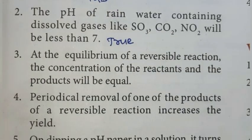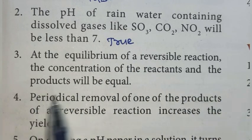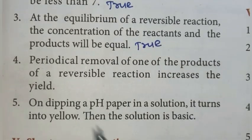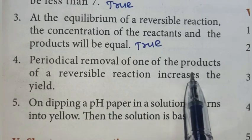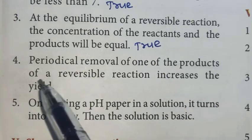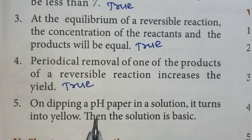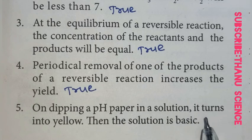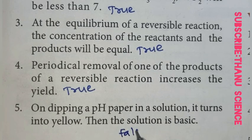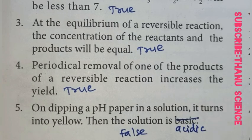Third: At the equilibrium of a reversible reaction, the concentration of reactants and products will be equal. True. Fourth: Periodical removal of one of the products of a reversible reaction increases the yield. Yes, this is true. Fifth: If pH paper turns yellow when dipped in a solution, then the solution is basic. This is false, not basic, it's acidic. Thank you students.